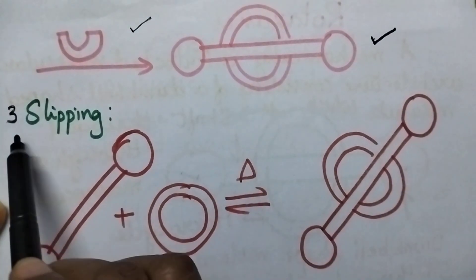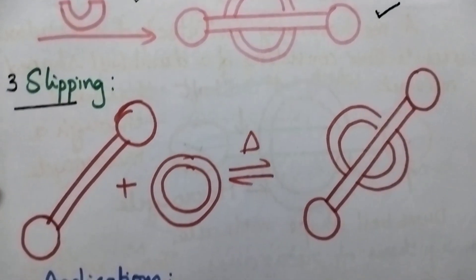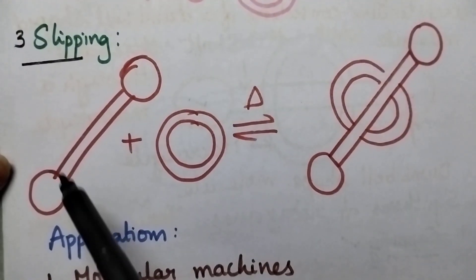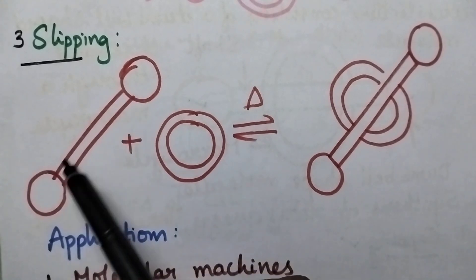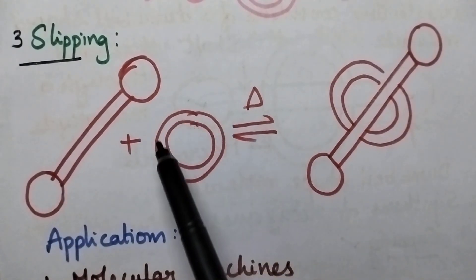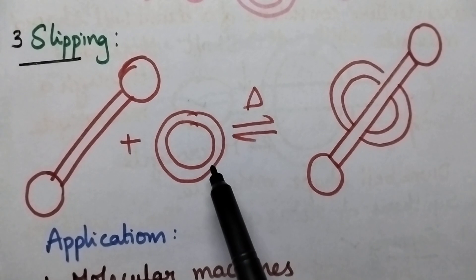The third method is called the slipping process. In this method, the dumbbell-shaped molecule is already available, and the complete macrocycle is also available.